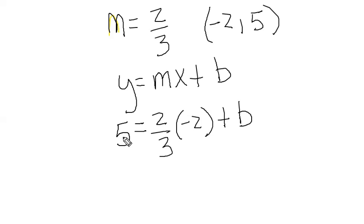So we can solve this equation for the letter b. We're going to multiply both sides by 3 to get rid of our fraction. We have to multiply the b by 3 as well. Here the 3's cancel out, so now we're left with 15 equals 2 times negative 2, which is negative 4, plus 3b.